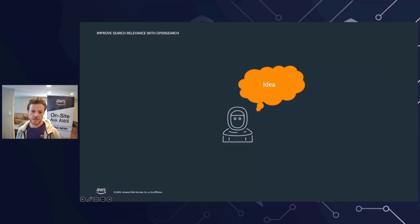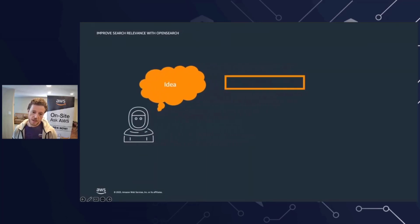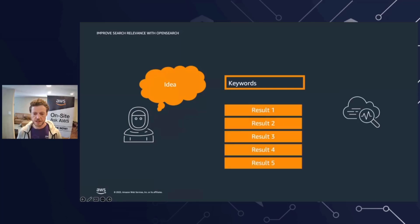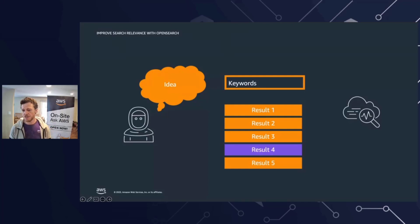So what is search relevance? Generally speaking, a user has some thought or idea. That user will enter some keywords. The search engine takes those keywords and produces some results or outputs. The user's intent may or may not match the top results, and whether this is document, database, or product search, the goal is to improve the match between the user's thoughts or ideas and the results returned by our search engine.